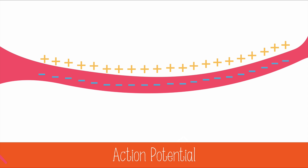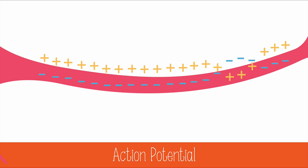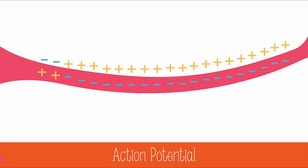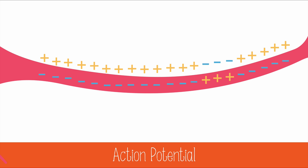Nerve impulses are actually waves of action potentials, which means ions are flowing in and out of the cell in a wave-like pattern. Because of the refractory period, where sodium ions will not flow out of the cell by diffusion, action potentials can only move in one direction. They begin at the dendrites and they end at the axon terminals.